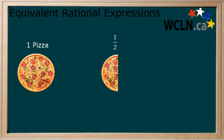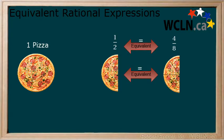If you have half of a pizza, and that half is cut into 4 pieces, your fraction representing that pizza is 4 over 8. These fractions are equivalent. While they look different, they represent the same amount. This is the same idea that we are going to apply to rational expressions.